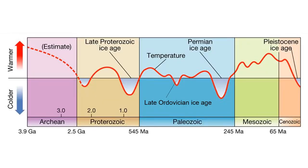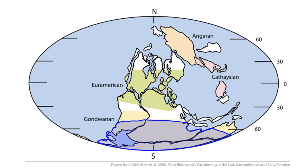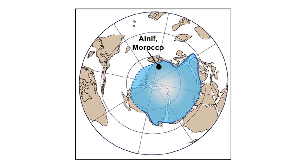In the last 500 million years there have been two other ice ages: the Late Ordovician and the Permian ice ages. The Late Ordovician ice age began around 445 million years ago and the Permian ice age around 300 million years ago. During the Permian ice age, the supercontinent Pangaea stretched from the Northern Hemisphere all the way to the South Pole, where ice sheets developed over the continents of Africa, South America, Australia, and Antarctica. South America and Africa were also covered by extensive ice sheets during the Late Ordovician ice age.